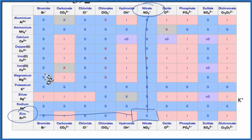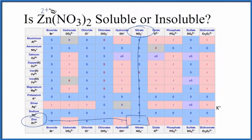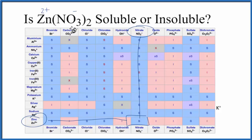So when you put zinc nitrate into water, you'll get the zinc ion, that's Zn2+, and then you get two nitrate ions. They have a one minus ionic charge. So you have Zn2+ aqueous, and you'll have two NO3- aqueous. So in answer to our question, zinc nitrate is soluble in water.